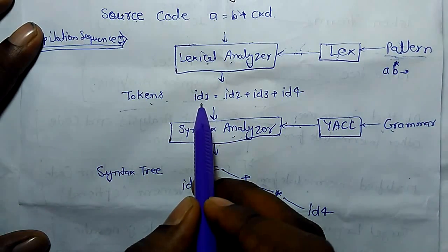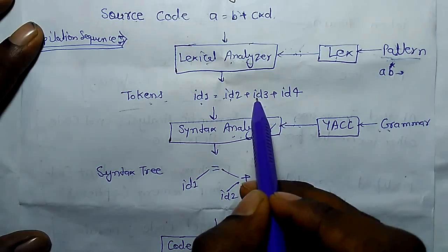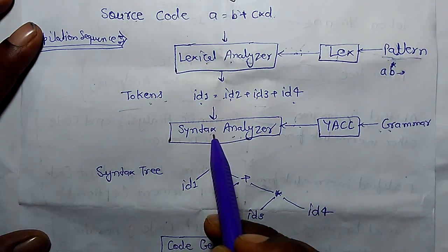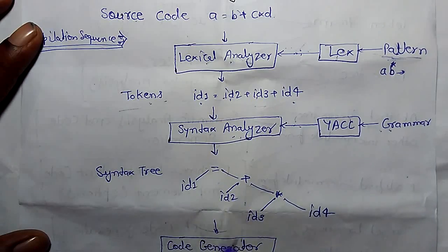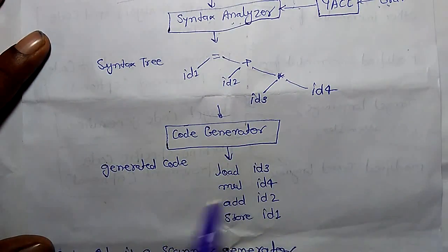For A it has created token id1, for B id2, C id3, D id4, and syntax analyzer generates syntax tree on these tokens and finally code is generated.